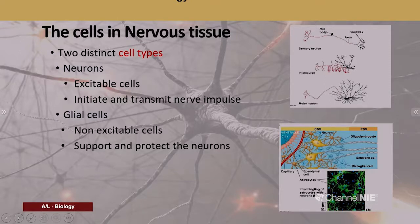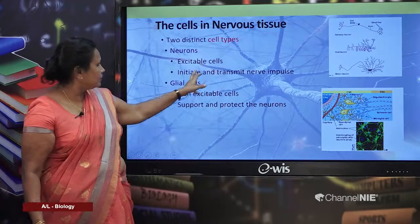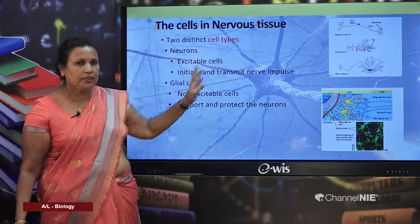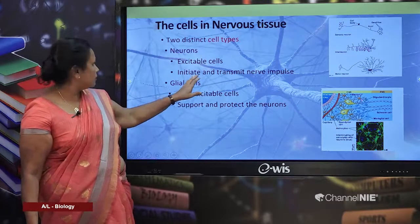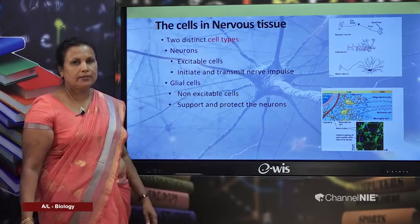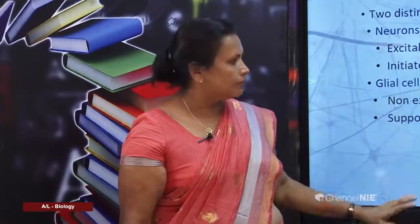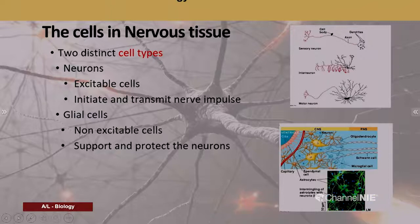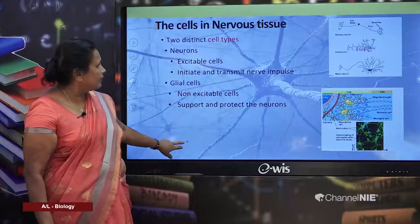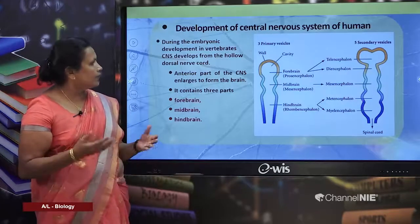Different types of nerve cells are found in nervous tissue. Some are known as neurons and others as glial cells. Neurons are excitable cells that initiate and transmit nerve impulses. Glial cells are non-excitable cells but are very important for the support and protection of neurons.